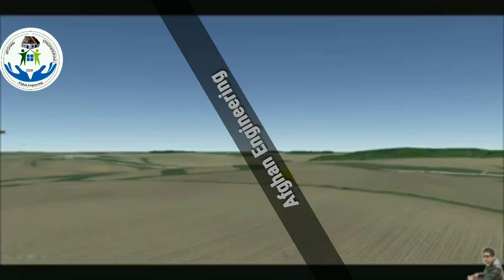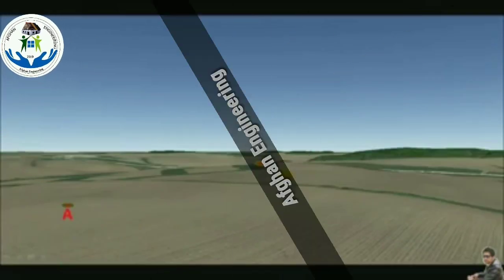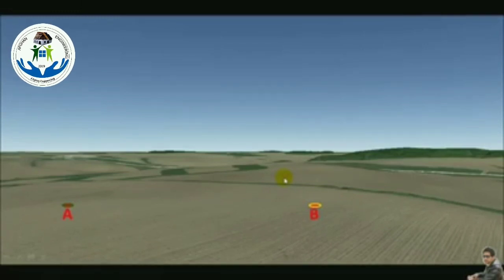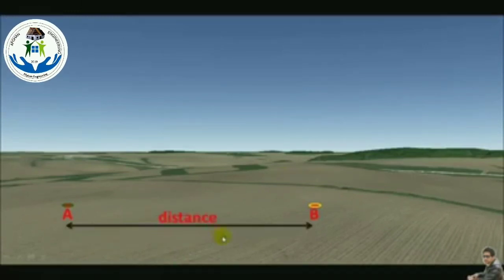If there are two points on earth's surface like point A and point B and we need the distance between these two points, here the distance means the horizontal distance between these two points.